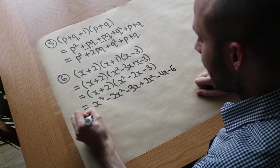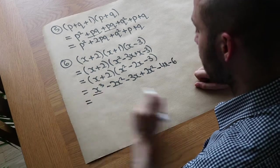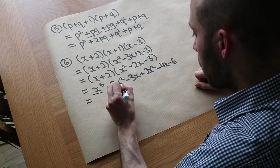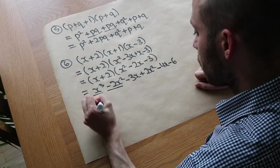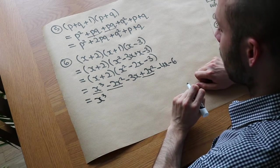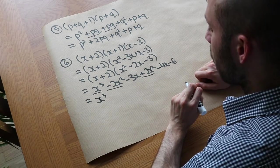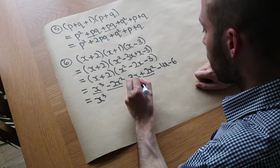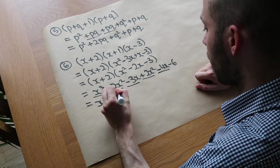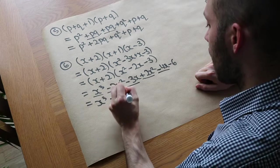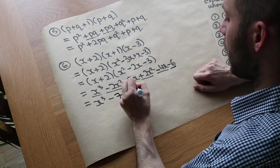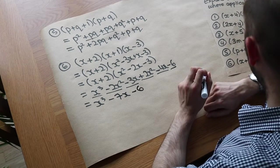Can we collect any like terms? x cubed — nothing collects with that. The minus 2x squared and plus 2x squared cancel out. We also have minus 3x minus 4x, which is minus 7x. And finally we've got minus 6 at the end. That is the final answer: x cubed minus 7x minus 6.